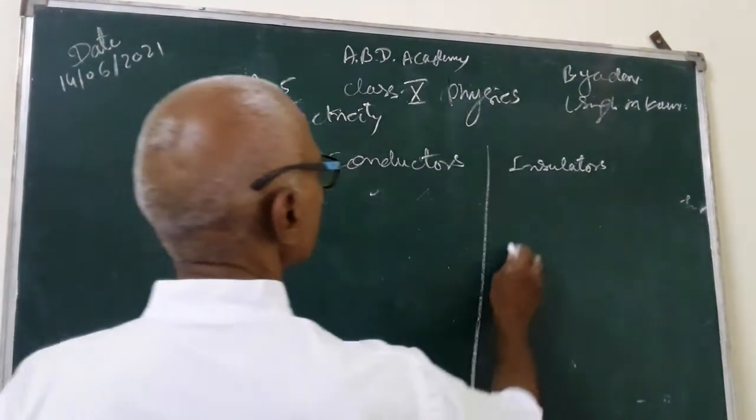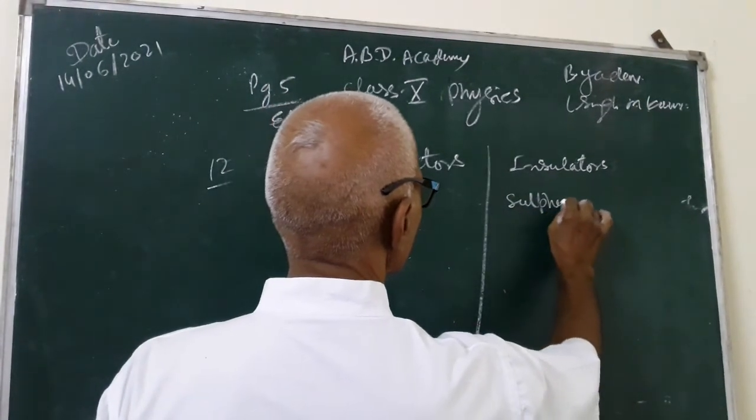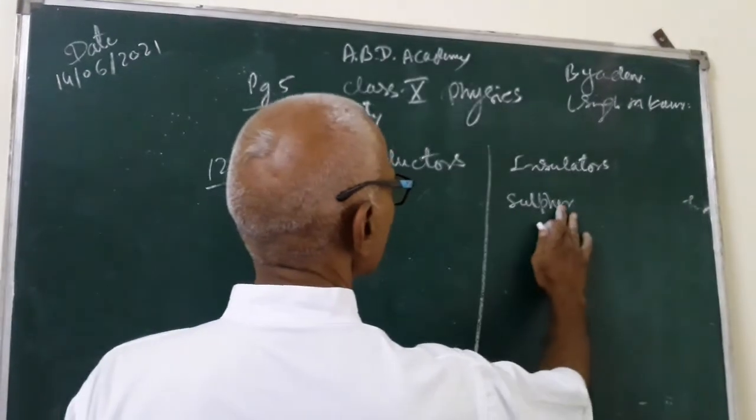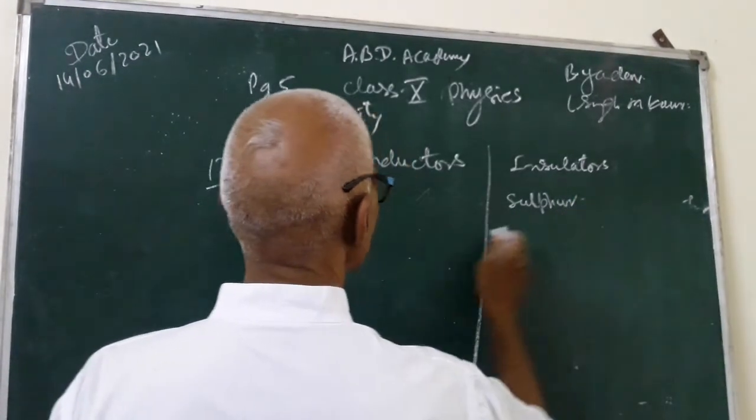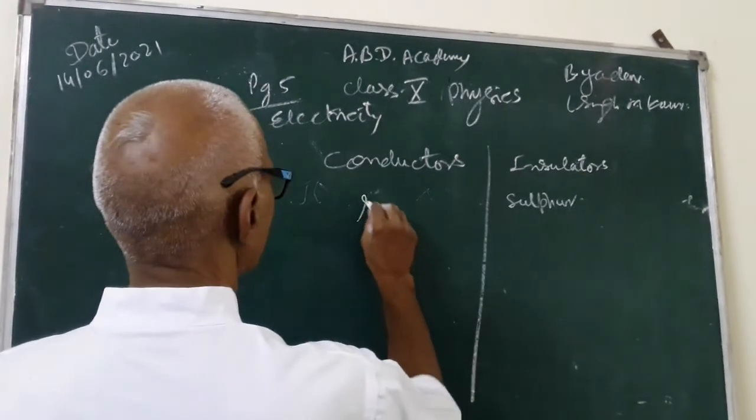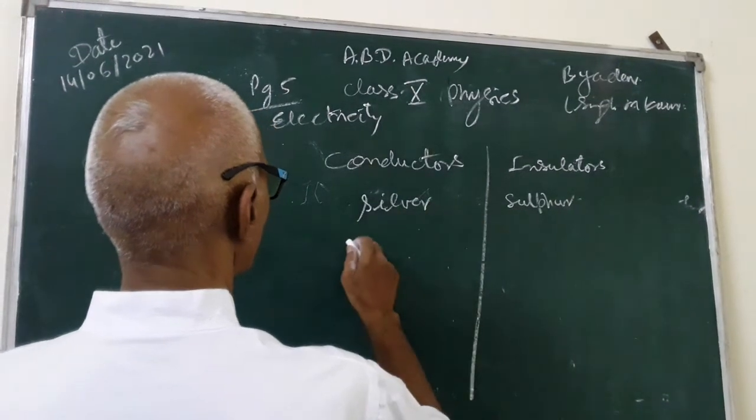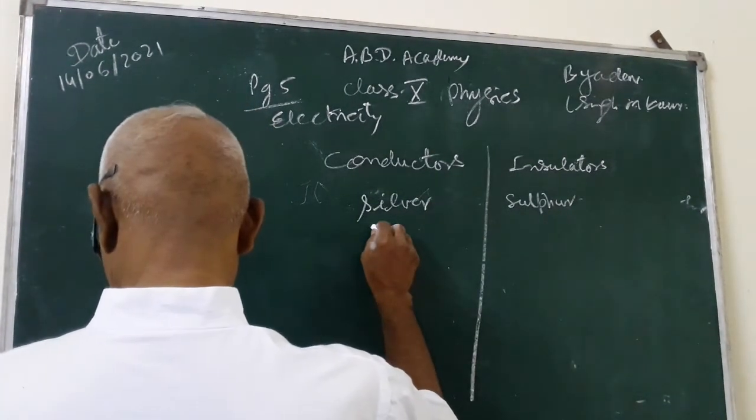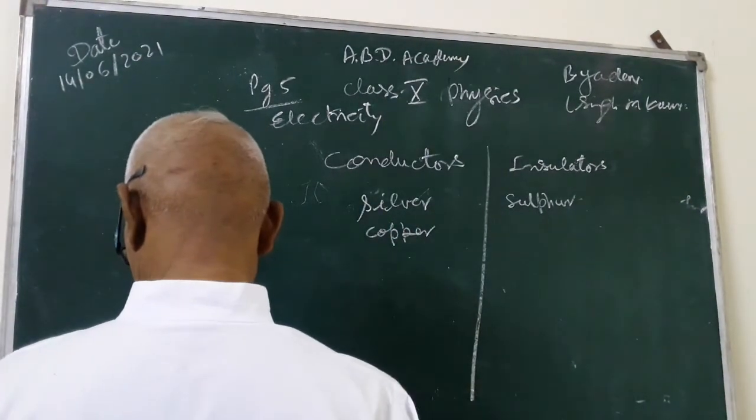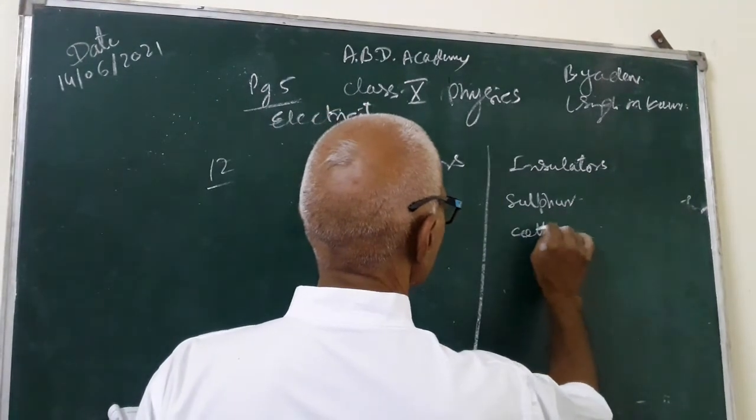In conductors. Sulphur is an insulator. Silver is a good conductor. Copper is very good conductor.